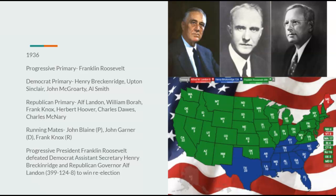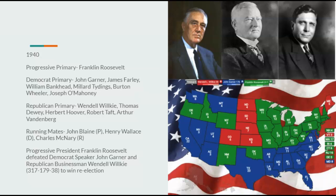Roosevelt would run for a third term, this time running against Wendell Willkie and John Nance Garner. Garner would do a lot better in the South, and Willkie would do better in the Midwest. But Roosevelt would still end up winning this election because he's just too popular with his New Deal legislation.